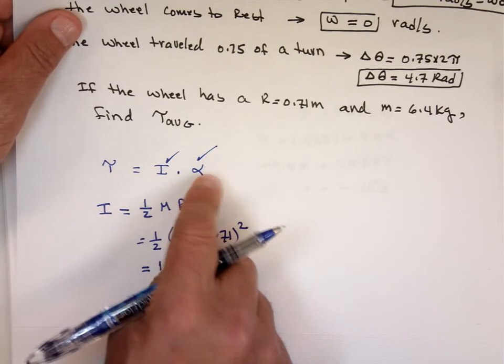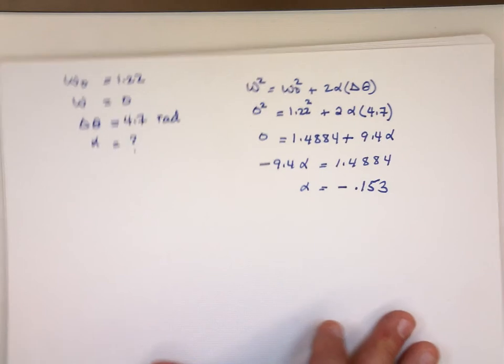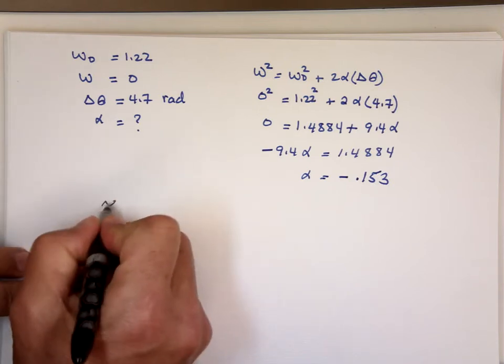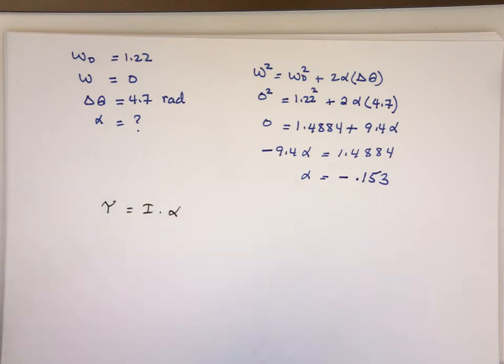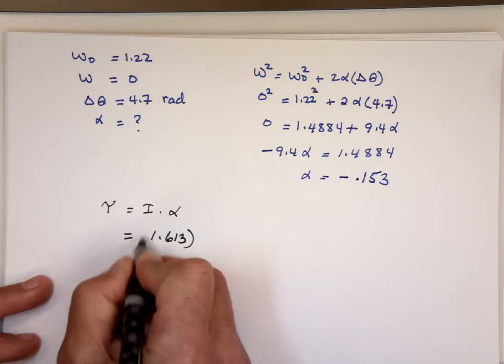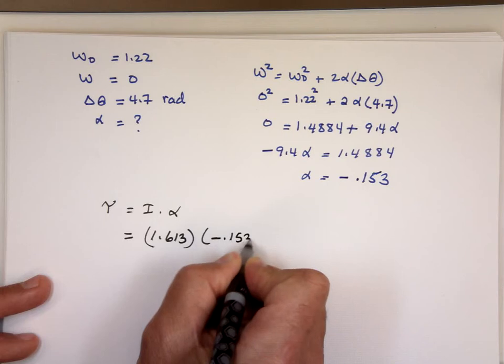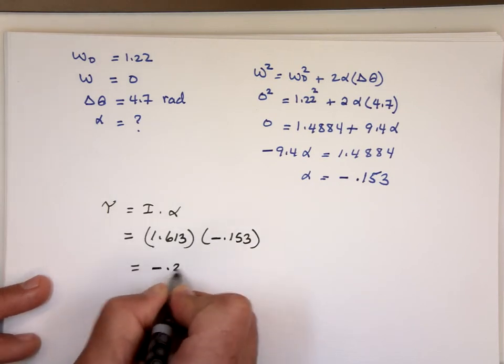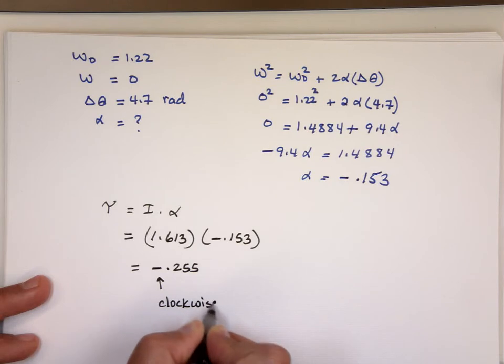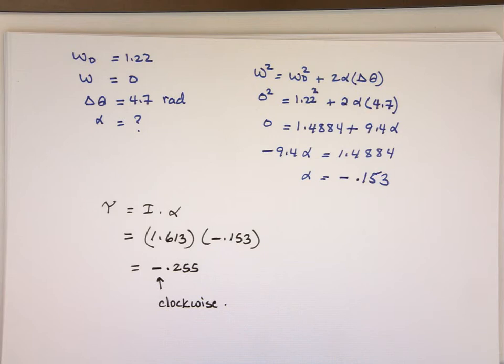Now, I go back to this equation. Now I know alpha. I get inertia and I get alpha. I should be able to find the torque. Torque equals inertia times alpha. When you push that wheel, you push it down so you're going to make the wheel spin clockwise, which means the torque is really negative there. Your inertia is 1.613. Alpha is negative 0.153. So, the torque is going to be negative 0.255. The negative tells me it's moving clockwise.